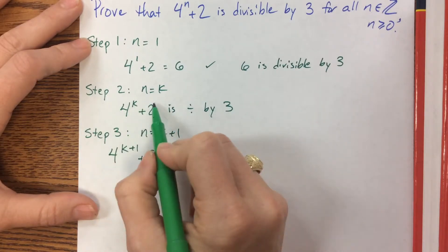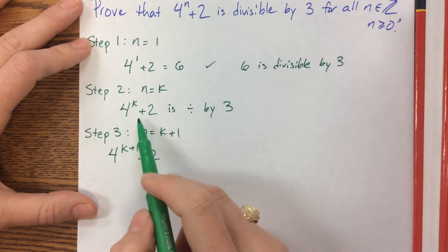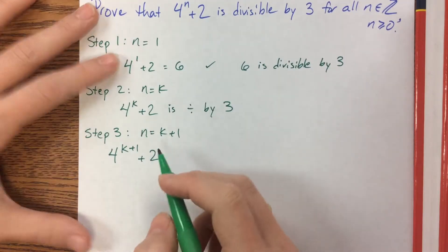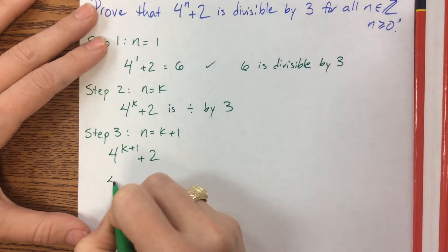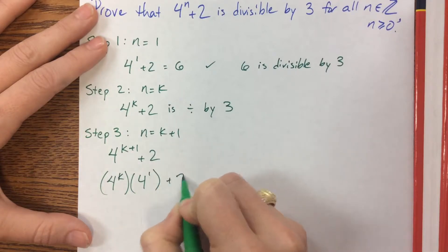I need to show that this is divisible by 3. Well I know that 4 to the k plus 2 is divisible by 3, so somehow I want that to show up somewhere in my work. And this is 4 to the k times 4 to the 1 plus 2.